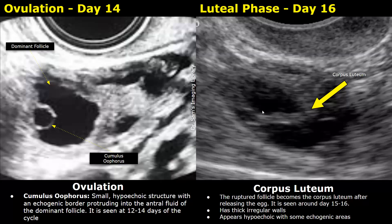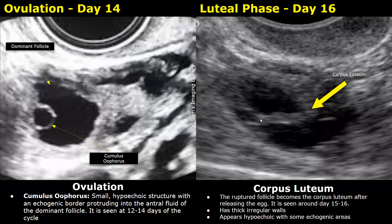The image on the right is taken on day sixteen, which is the luteal phase — ovulation has already occurred. The follicle has ruptured to release the egg prior to day sixteen. What we see here is the corpus luteum. The dominant follicle ruptures to release the egg and then becomes the corpus luteum. The corpus luteum has thick, echogenic, irregular walls. The appearance of the corpus luteum is a sonographic sign that ovulation has already occurred.